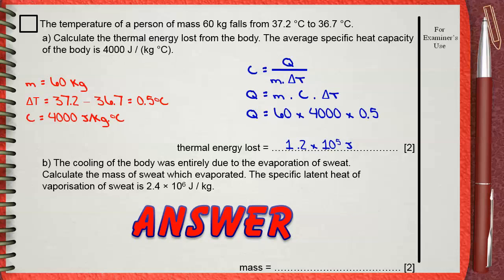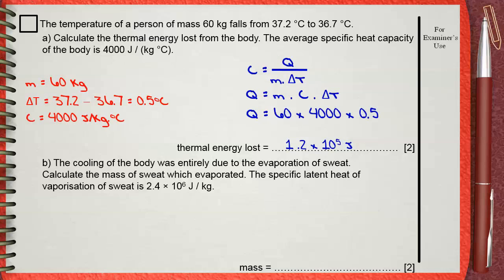You need to understand the idea of the question. There are two processes that are happening here. The cool down of the body, and this is due to the evaporation of sweat, which is of course water. This means that the thermal energy lost by the body to cool down is gained by sweat to evaporate. This means that Q, which is the thermal energy, is the same in both A and B of the question.